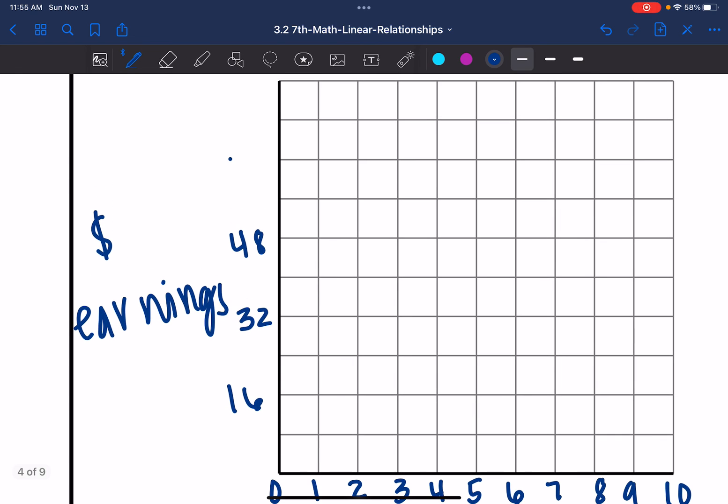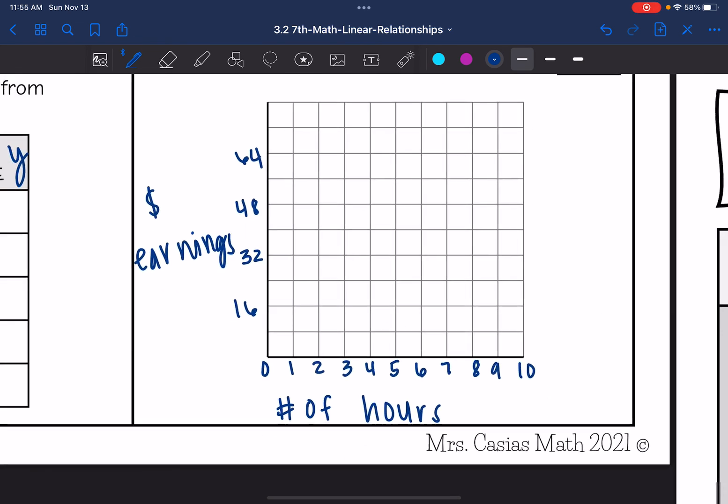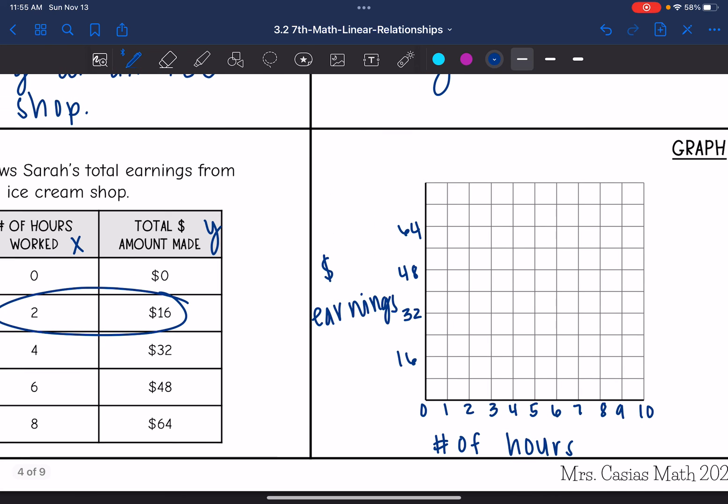And now I can plot the ordered pairs from the table. So it would be 0, 0, then 2, 16, then 4, 32, then 6, 48, and 8, 64.